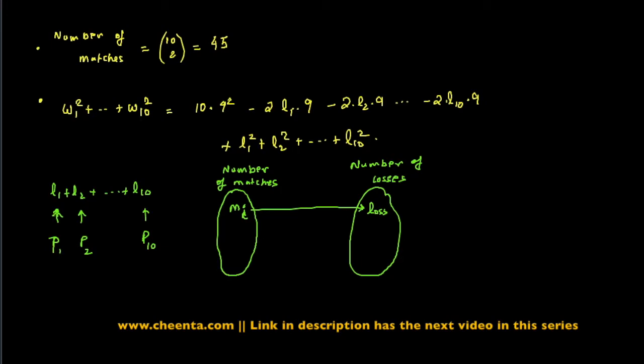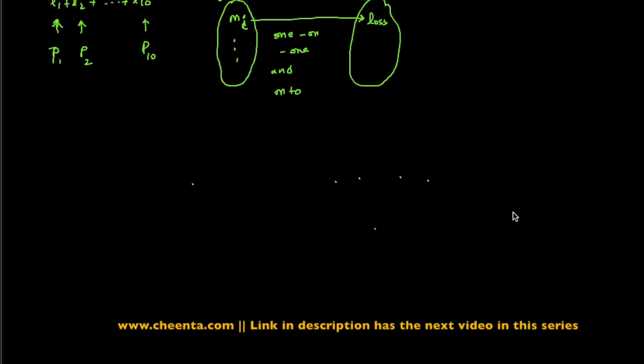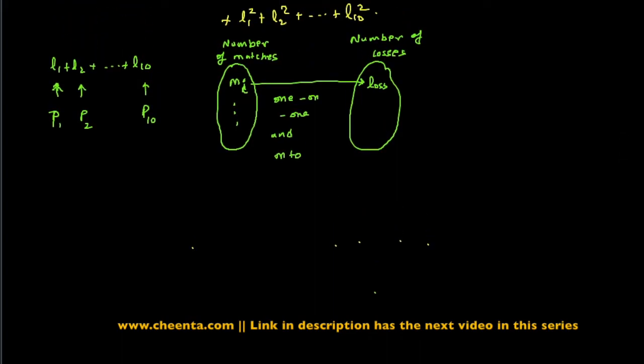So map it to that team which has lost that match, and you can easily check by either reasoning or hand computation that this is a one-to-one and onto map. That means the number of matches in the left-hand side is same as the number of losses in the right-hand side. This is a common technique of doing combinatorics problems. If something is difficult to count, we create another set which is easier to count, and we create a map which is a bijection between the two sets.